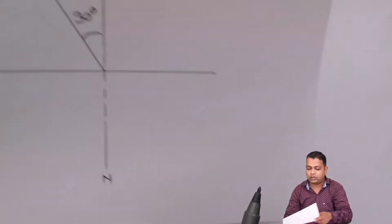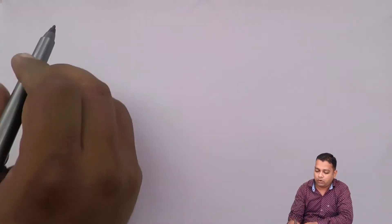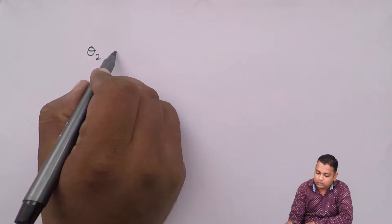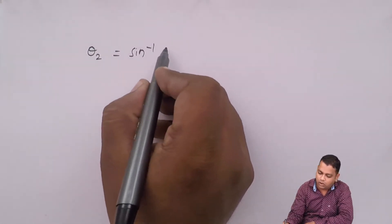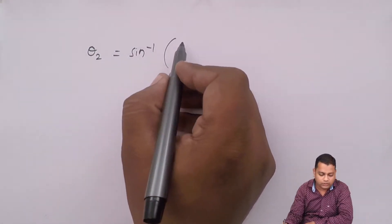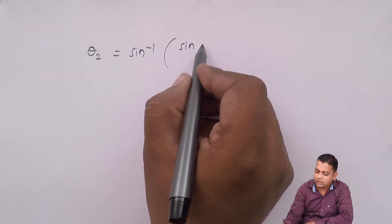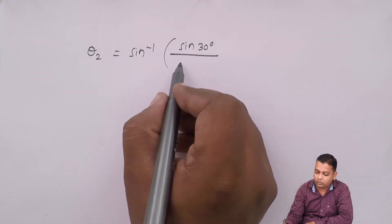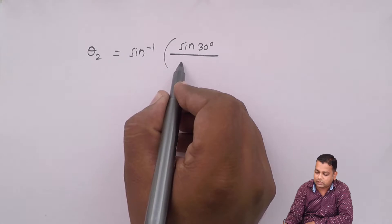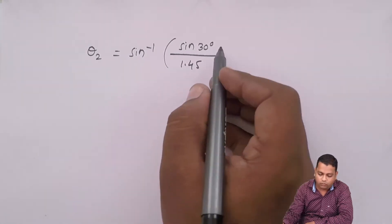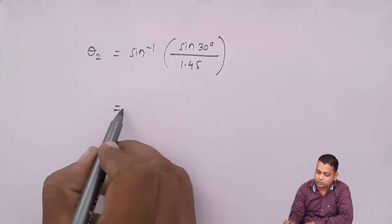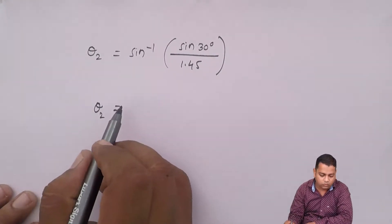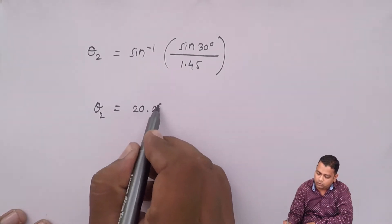Using Snell's law, the angle of transmission theta two is given by sine inverse of (sine of 30 degrees divided by the refractive index of medium two, which is 1.45). This gives us the angle of transmission theta two equal to 20.2 degrees.